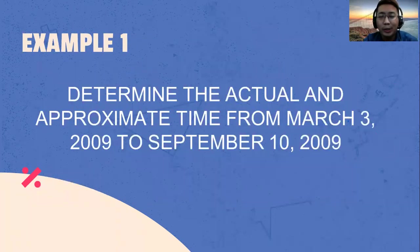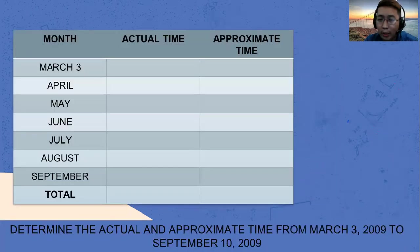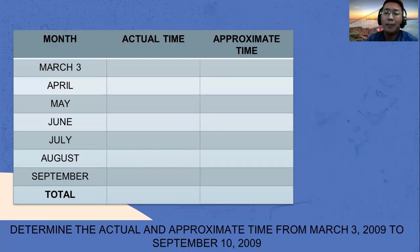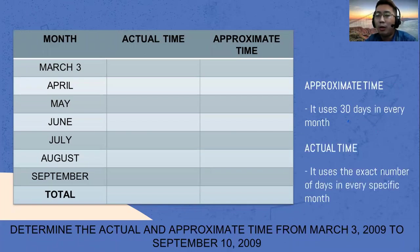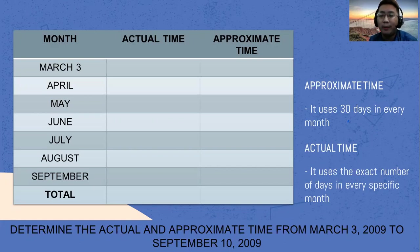Let's try to solve this one. Determine the actual and approximate time from March 3, 2009 to September 10, 2009. Always be reminded that approximate time uses 30 days in every month and actual time uses the exact number of days in every specific month.